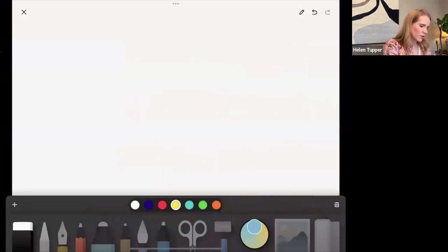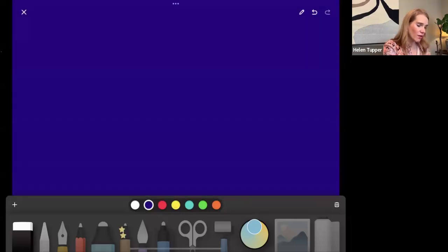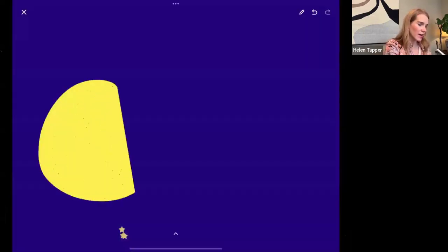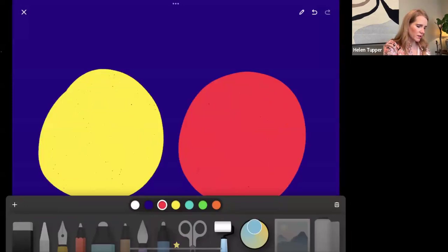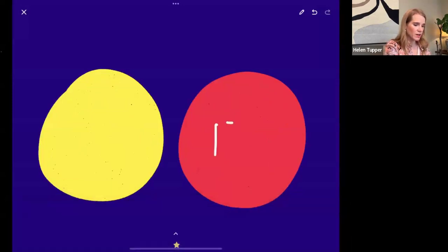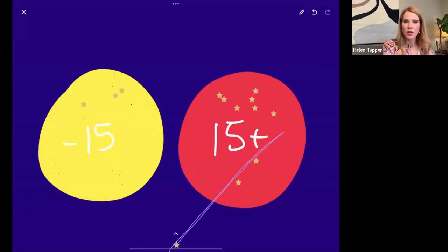In order to work out your workaholism score, basically add up your scores. The research says that if your total score is 15 or above, you are displaying significant signs of workaholism. So let's just see where you are. If you've got 15 or more, put a star here. If you're less than 15, you're going to go here.